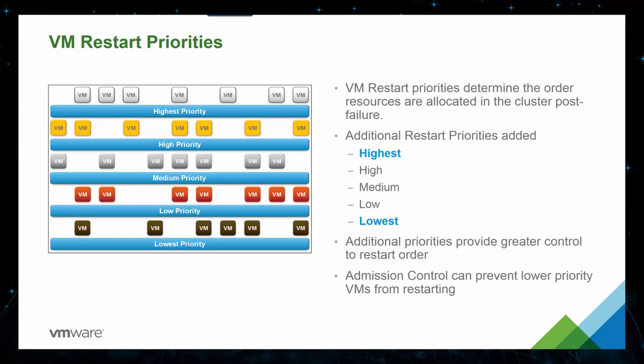The VM restart priority determines the relative order in which virtual machines are allocated resources after a host failure. Such virtual machines are assigned to hosts with unreserved capacity. With the highest priority, virtual machines are placed first and continue down to those of lower priority until all virtual machines have been placed or no more cluster capacity is available. A host then restarts the virtual machines assigned to it in priority order. If there are insufficient resources, vSphere HA waits for more unreserved capacity to become available — for example, due to a host coming back online — and then retries the placement of these virtual machines.